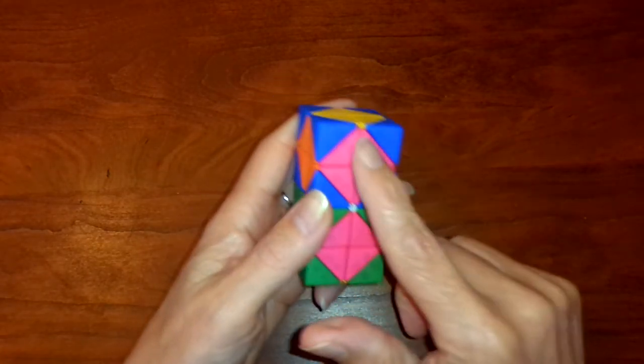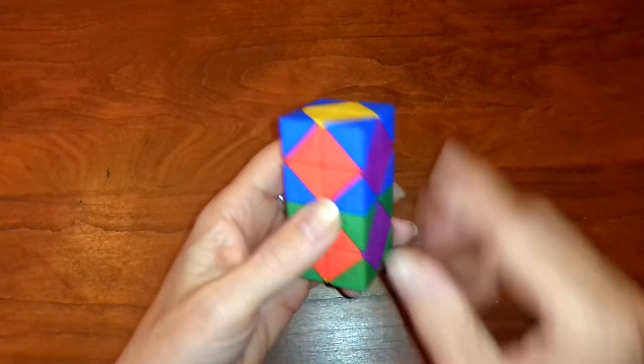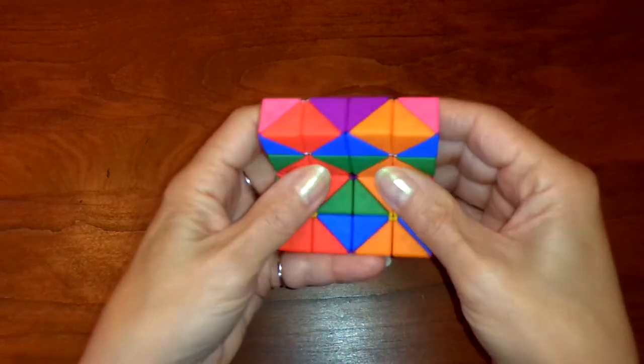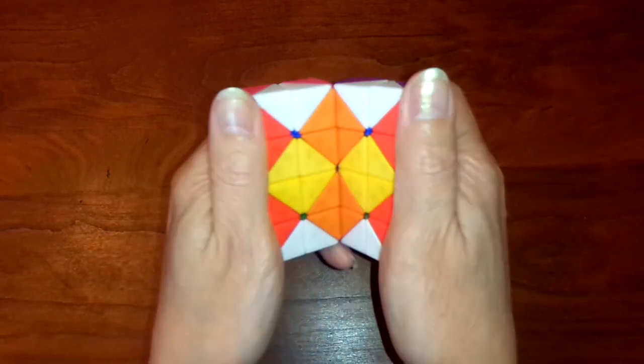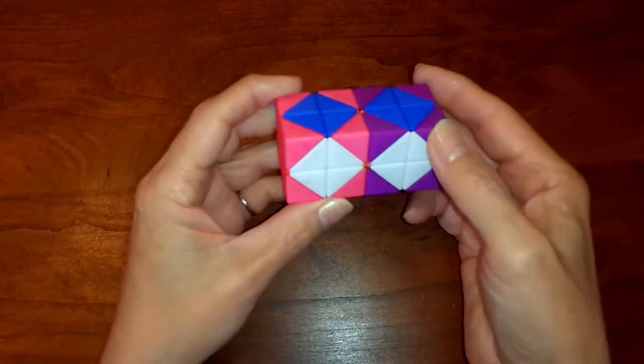So like, let's say we want the pink-purple axis to be on the outside where green-blue is. This is the way I do it, and there are other ways as well. So still solved, but purple-pink on the outside.